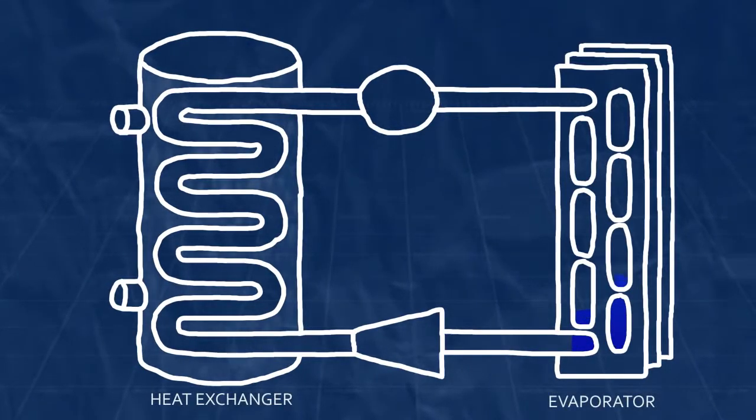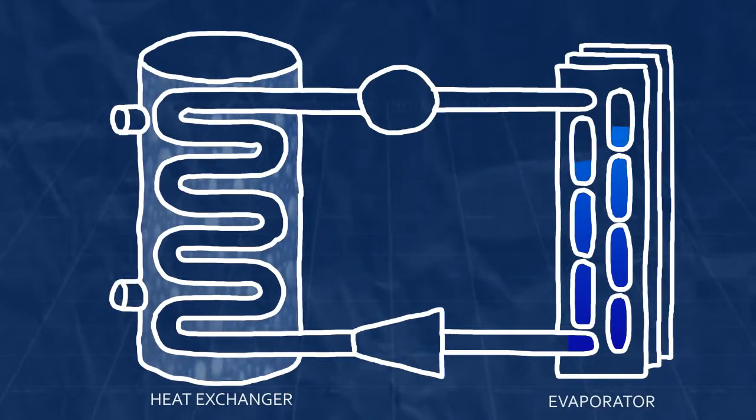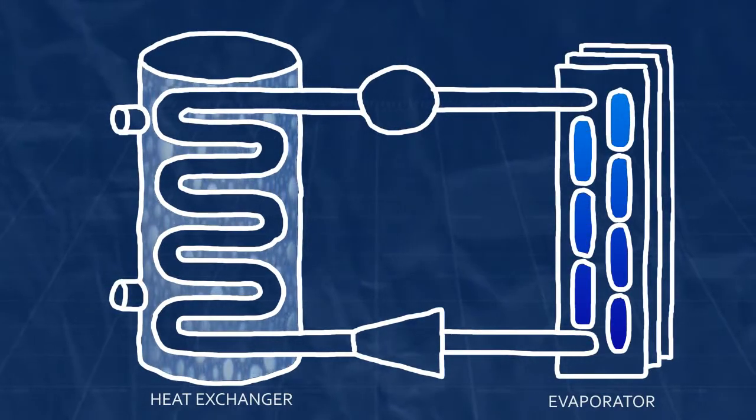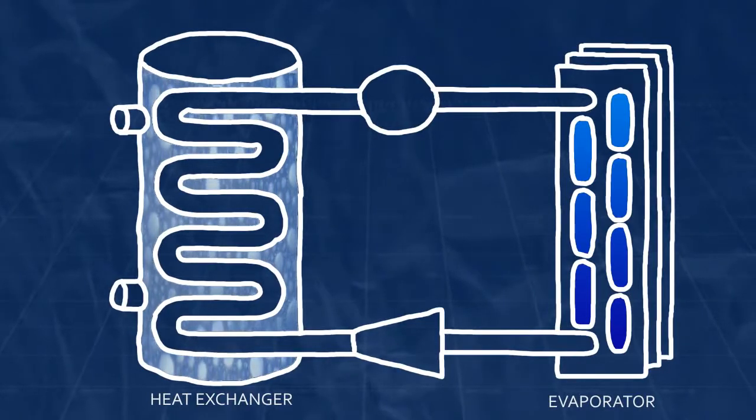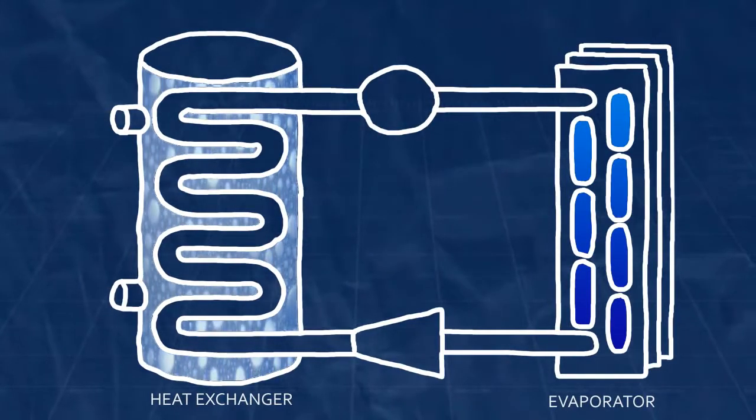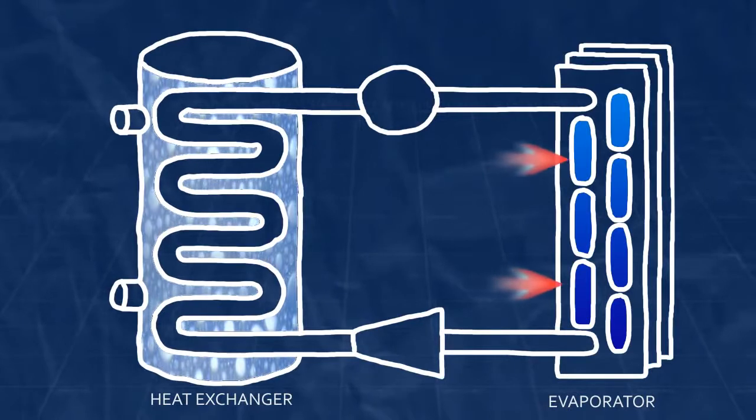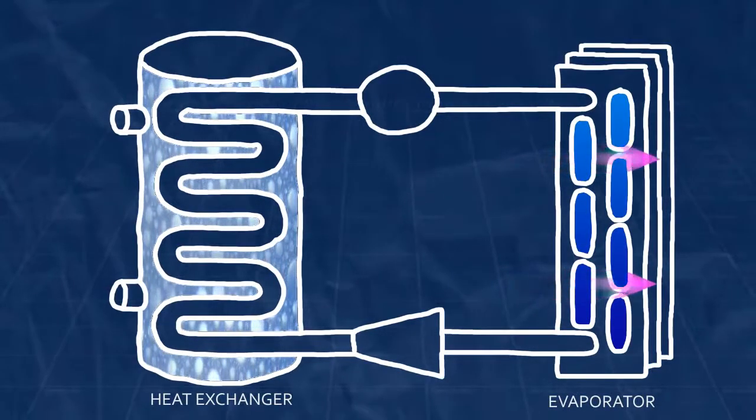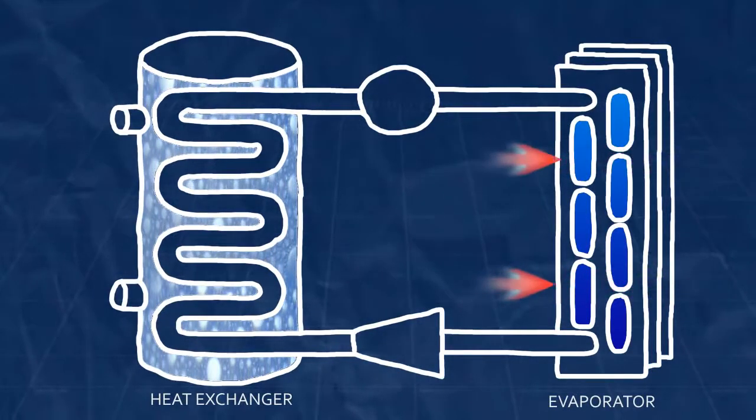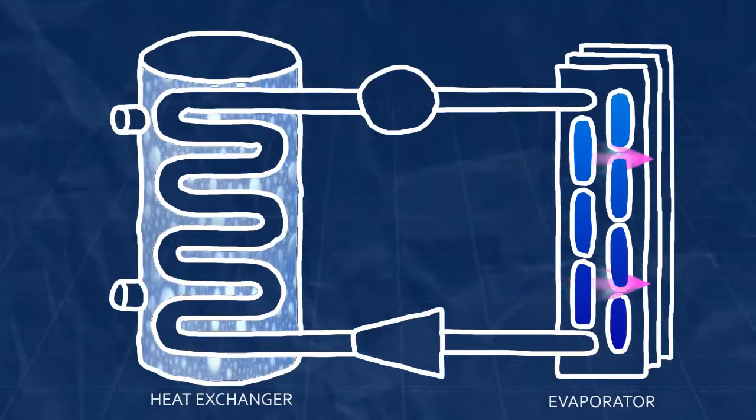In the beginning of a cycle, the refrigerant is in a cold, low pressure, liquid gaseous state flowing through tubes that are exposed to room air. It is colder than the room air, so the heat in the air moves to the refrigerant. This is because heat always wants to move from warmer things to cooler things.